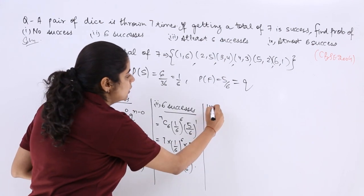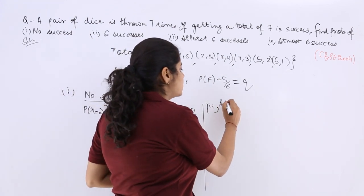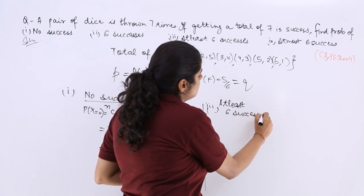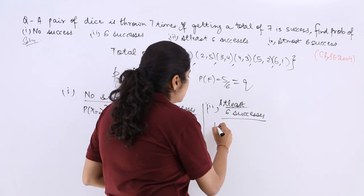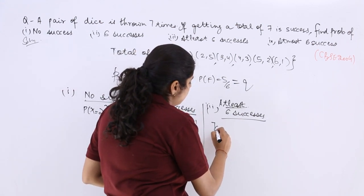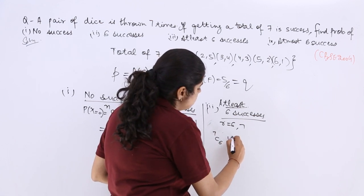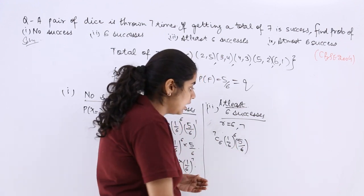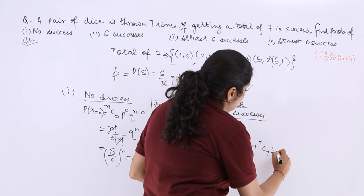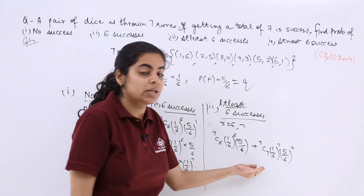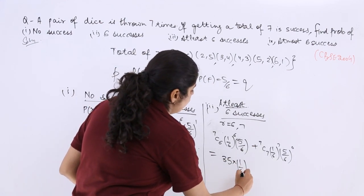What about the third part? The third part is regarding at least 6 successes. So minimum 6 successes should come. So when I say at least 6 successes means minimum 6 successes. Minimum 6 successes means either 6 is the value of r or 7. So it will be nCr. I erase it here because r can be both 6 and 7. So nCr p raised to the power r, q raised to the power n-r. So this is there. Also, I know that at least means one more thing has to be considered, which is 7C7 p raised to the power 7, q raised to the power 7-7 is 0. So now what is my answer? So for this part, I know we already solved in the previous part, which is 35 multiplied by 1 by 6 whole raised to the power 7.